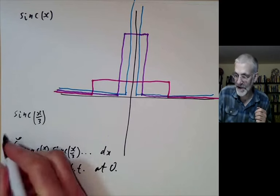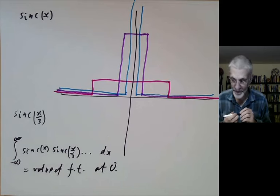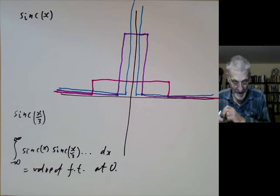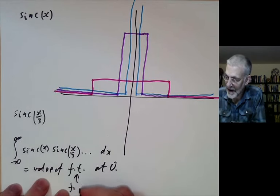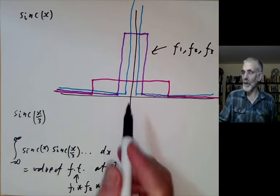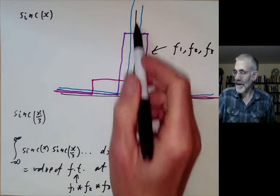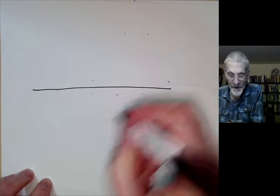The Fourier transform at zero is just the integral from minus infinity to infinity, up to constants depending on how you normalise. The Fourier transform of a product of sinc functions is just the convolution of f1, f2, f3, and so on, where these are the corresponding block functions. So what we do is take the convolution of this finite sequence of functions and take its value at zero. And there's an easy way to work out the value at zero of a convolution of a step function with another function.